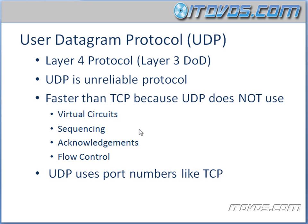UDP basically sends the segment off, and if the destination host gets it, it doesn't care. It just sends it off — it doesn't care what order the host gets it in, it doesn't even know if the host is there, it doesn't even create a virtual circuit, and it doesn't wait for acknowledgments. So it just keeps sending.